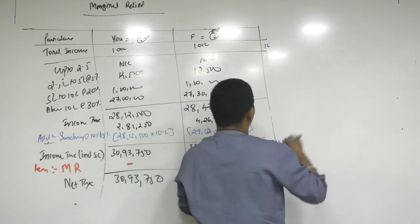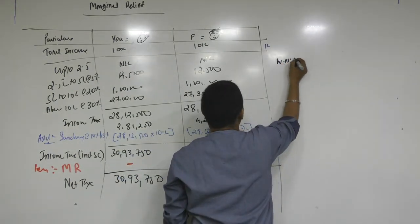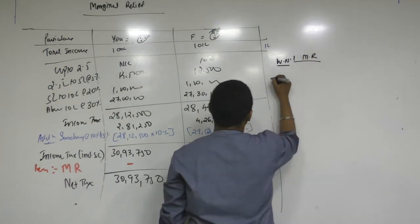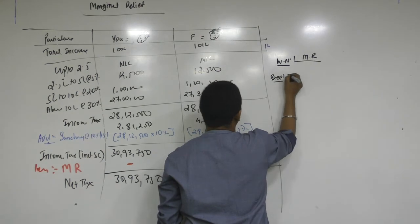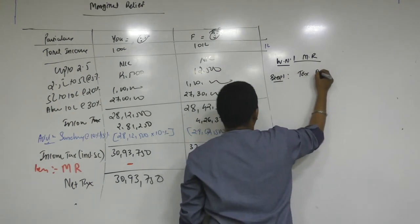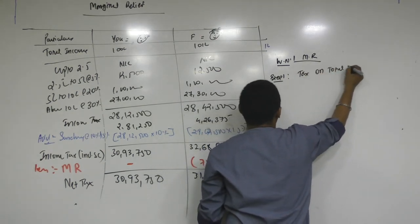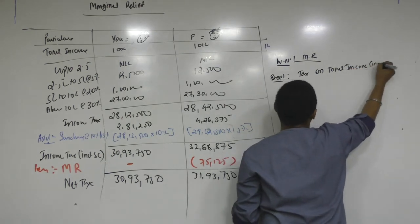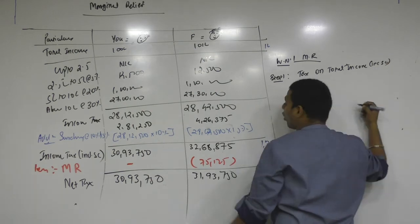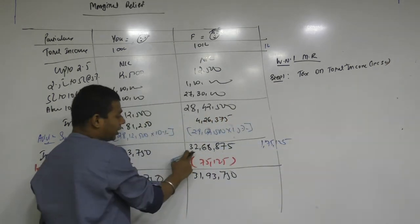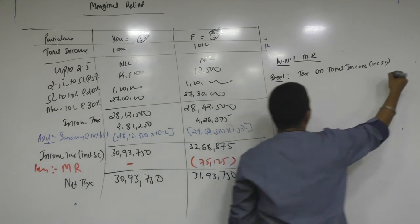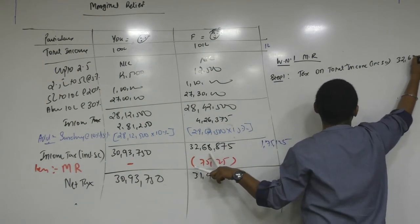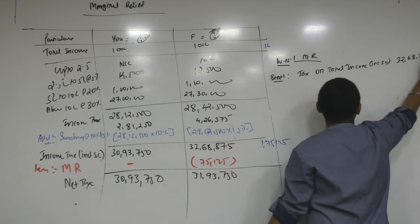Okay. How do we prepare working note? Working note number 1. Marginal relief. Okay. Now you please help me. Step 1. Come on tell me step 1. What was the step 1? Tax on total income. Total income including surcharge. Surcharge. Surcharge. You have already completed that number. This is tax on total income including surcharge. 32,68,875.